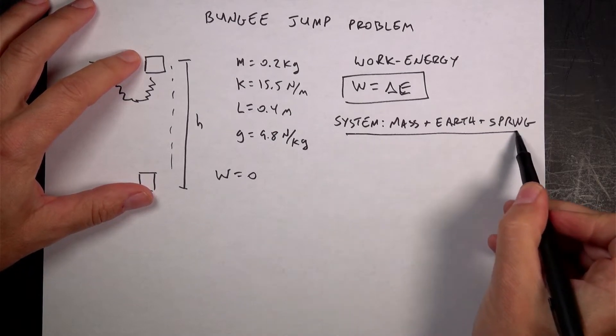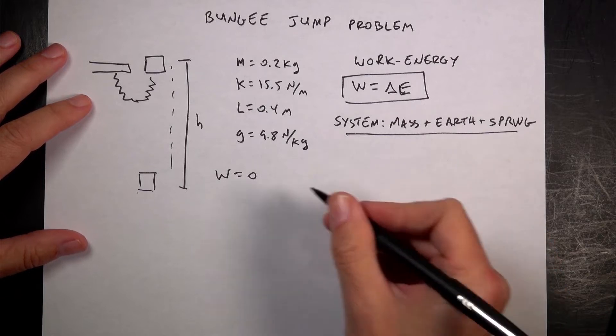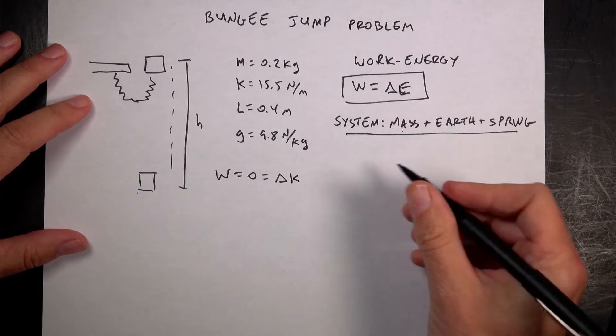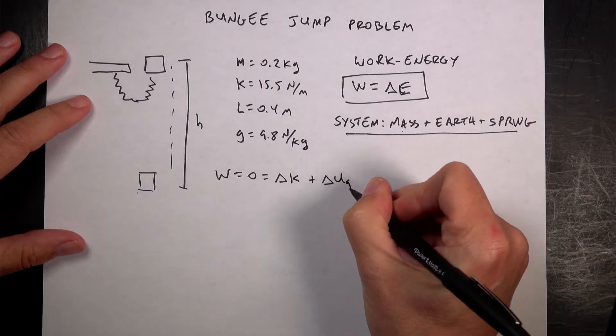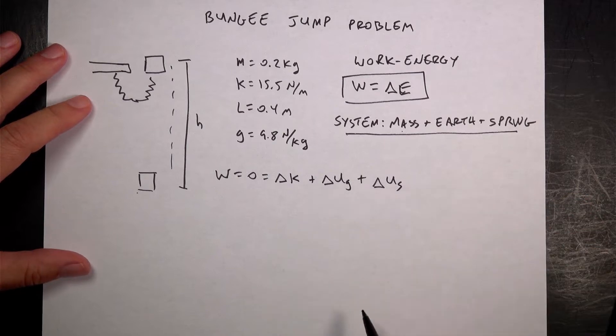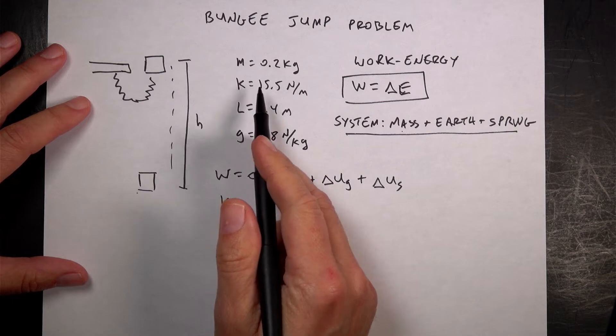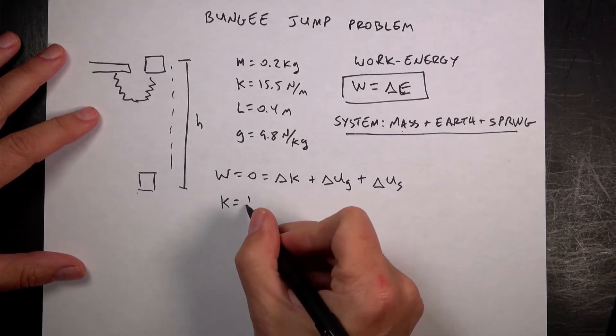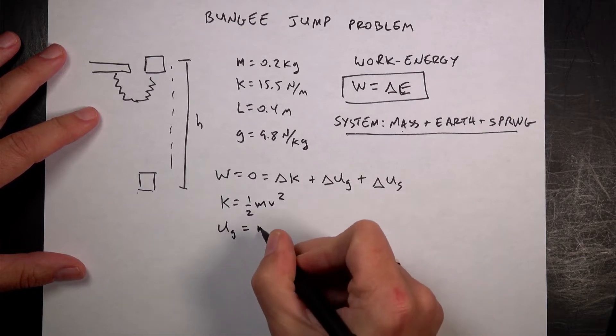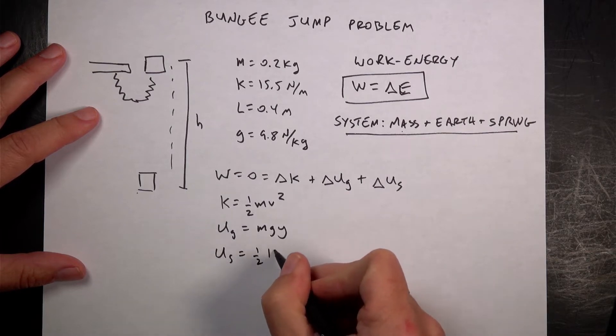Now, the system also tells me what kind of energies I have. If I have a mass that can move, then I can have a change in kinetic energy. If I have the mass plus the earth interacting, then I can have a change in gravitational potential energy. And if I have a spring that can get stretched, I have a change in spring potential energy. So here we have the kinetic energy. The gravitational potential energy is mgy. And the spring potential energy is one-half ks squared.